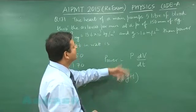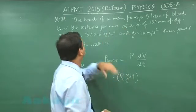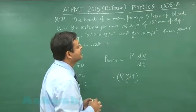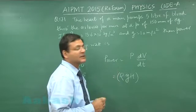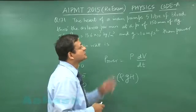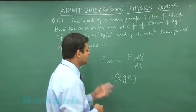And this volume rate of pumping, this is 5 liter of blood per minute. So this 5 liter will be converted into meter cube. You understand? 1 meter cube is 1000 liter, so 5 into 10 power minus 3 you can substitute here.